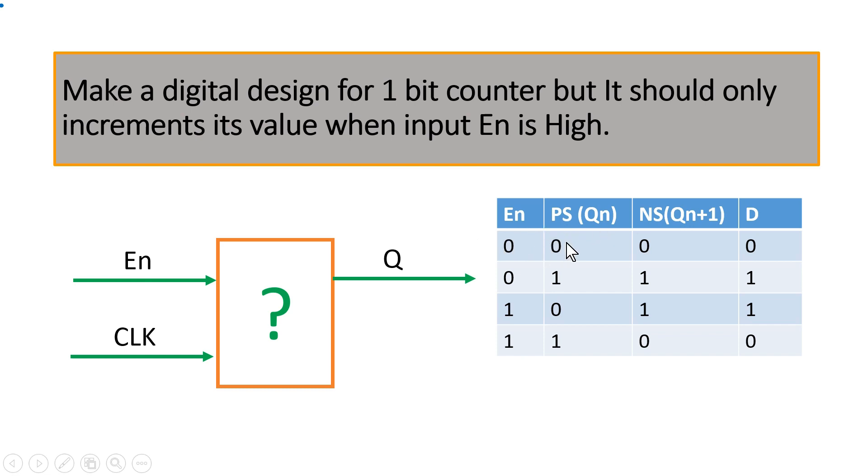Now you have to write all the possible combinations 00, 01, 10 and 11. Now as per the definition as per the requirement when enable is 0 the next state on this Q will be equal to the present state. So when enable is 0 the next state will be equal to present state. Similarly when present state is 1 and enable is 0 Qn plus 1 will be 1 only.